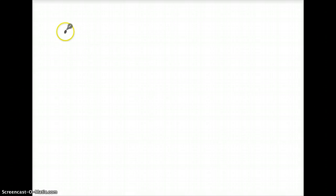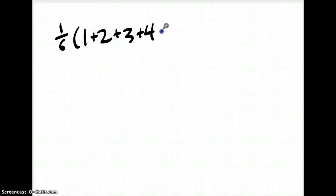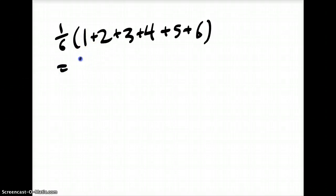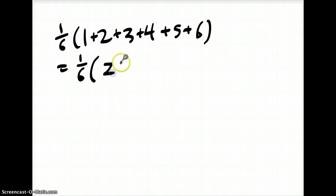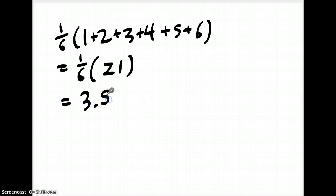For rolling a die, we know the outcomes 1, 2, 3, 4, 5, and 6 have a uniform distribution. So really what it would be is 1/6 times 1, plus 2, plus 3, plus 4, plus 5, plus 6, which we find to be 1/6 times 21, which is equal to 3.5. So now we have the expected value.